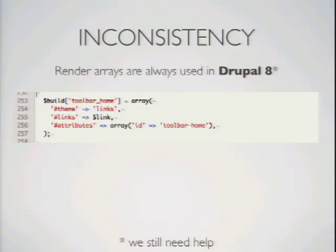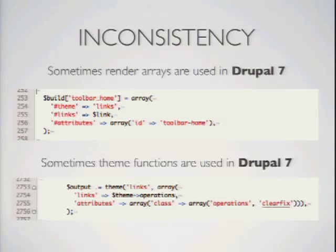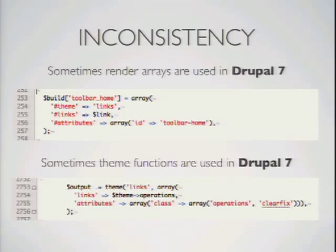It's basically taking the call to the theme function and converting that to a render array with hash-theme-equals. It's usually a fairly straightforward conversion to this new way, and like Fabian was saying, there are so many benefits.